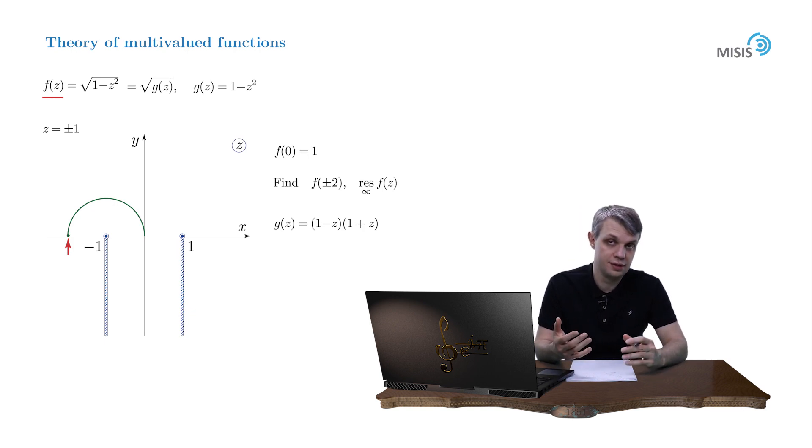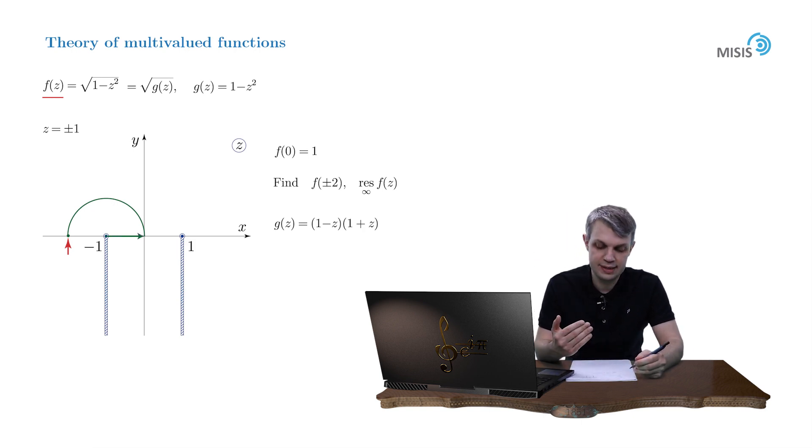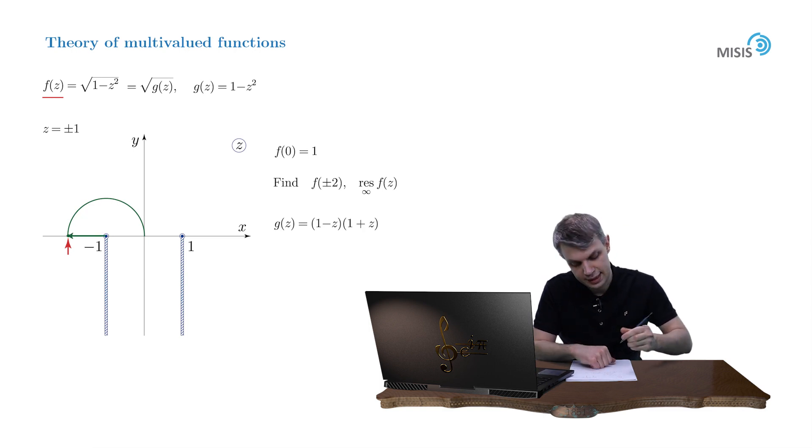And trace the change of the arguments of the constituents of our g-function. We see that this time the arrow representing number 1 plus z undergoes a rotation in the counterclockwise direction by angle pi. So the change of the argument of 1 plus z is pi.